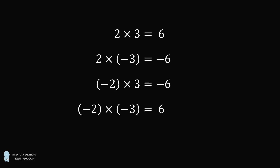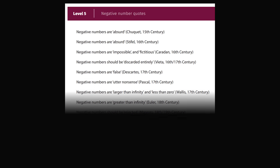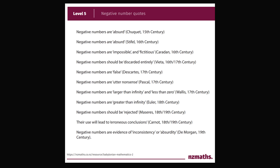And if you ever struggled with it, don't worry, you're in very good company. Some of the greatest mathematicians have struggled with the concept of negative numbers. This list includes the likes of Vieta, Descartes, Pascal, Euler, and De Morgan. They thought that negative numbers were absurd, should be discarded, are false, and should be rejected. So just negative numbers alone is a confusing concept. And if you want to understand why negative times a negative is a positive, that's an even greater level of difficulty. In this video I want to present a few intuitive justifications.